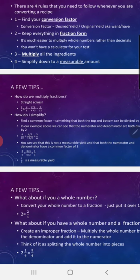If you have a whole number and a fraction — a mixed number — create an improper fraction. Multiply the whole number by the denominator and add it to the numerator. For example, 2 and 1/4: 2 times 4 equals 8, plus 1 equals 9, giving us 9/4.